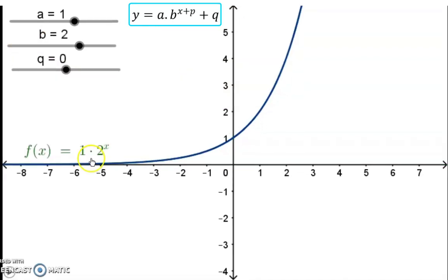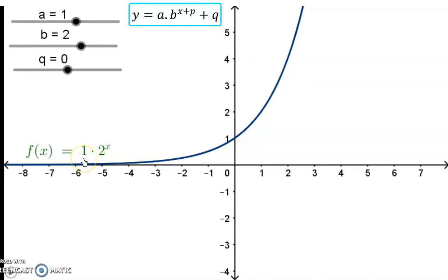The sign of the a value, just like with any graph, indicates a reflection around the x-axis. So, at the moment, the a value is positive, and we have our increasing graph, but when we change it to a negative value, you can see the reflection over the x-axis happening. The size of the a value indicates how steep the graph is.